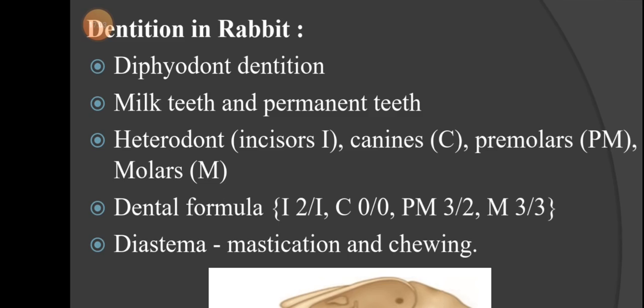Regarding dentition: the rabbit is diphyodont — meaning two sets of teeth are produced. First, milk teeth are produced in early stages, and after shedding them, permanent teeth are produced later. It is also heterodont — meaning different types of teeth are present, such as incisors (I), canines (C), premolars (PM), and molars (M).